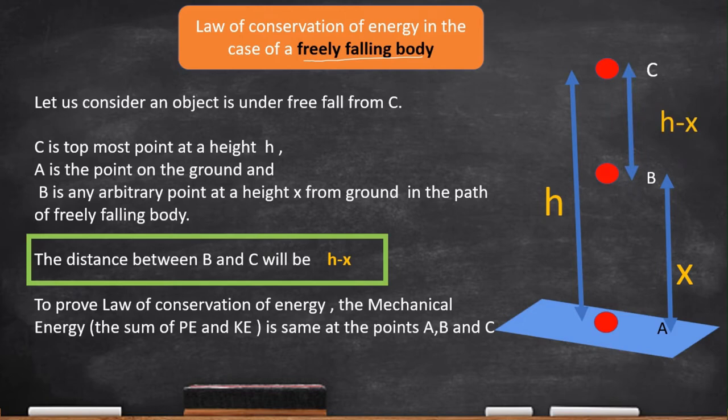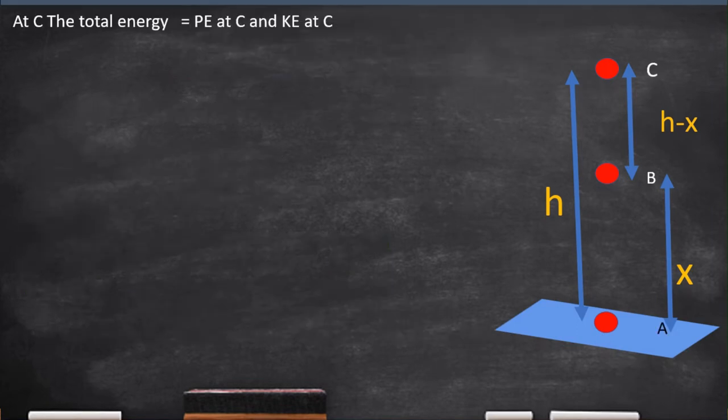To prove law of conservation of energy, the mechanical energy, that is the sum of potential and kinetic energy, is same at all the points A, B and C. For that, we will take first point C and we calculate the potential energy at C and kinetic energy at C.